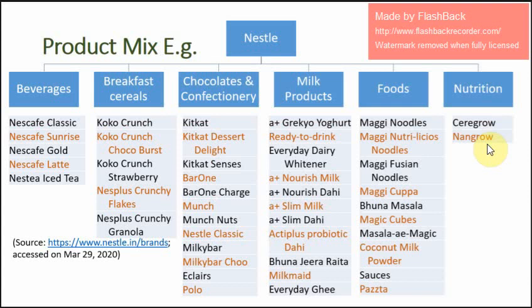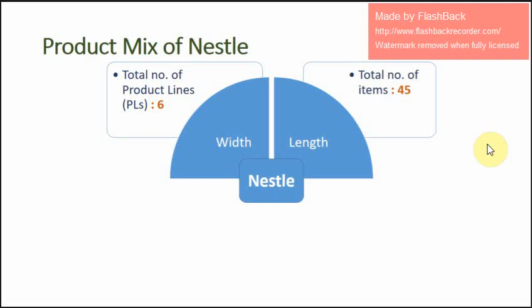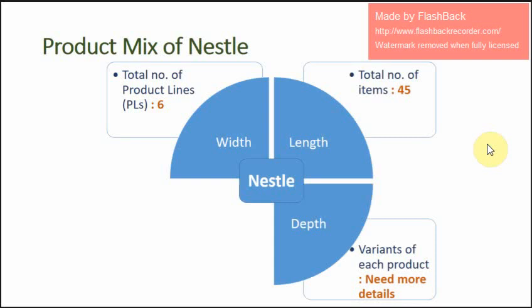The width of the product mix is the total number of product lines, which is six. If we count all the different products across all product lines, we can see that the total number of items is 45 — that is the length. To calculate depth, the data for different variants of each product was not given, so we need more details, which we will cover in another example.